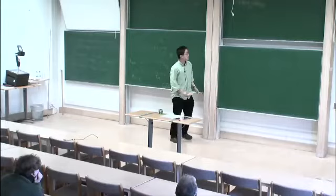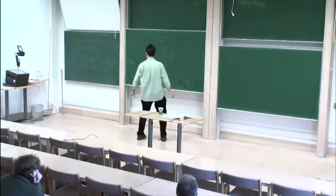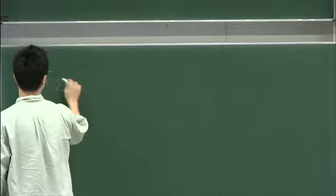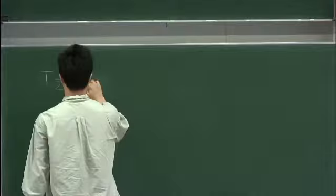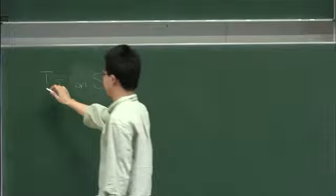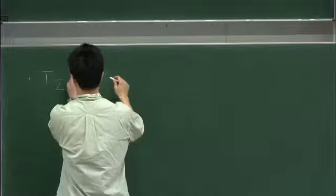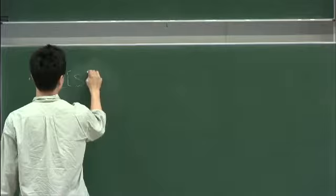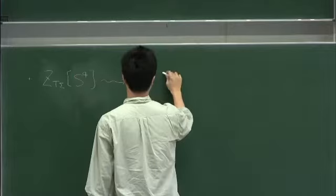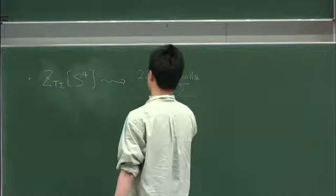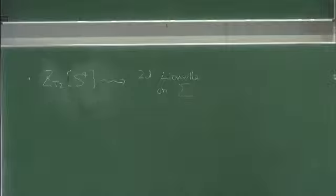The most famous example is the so-called AGT correspondence. If you have T_sigma, let's compute T_sigma on S4 — the partition function. You start with the four-dimensional N=2 theory and compute a partition function Z(T_sigma, S4). This one corresponds to a two-dimensional Liouville theory on the Riemann surface — the famous AGT story. Here we have some correlation functions and conformal blocks, and the correlation function corresponds to this S4 partition function.